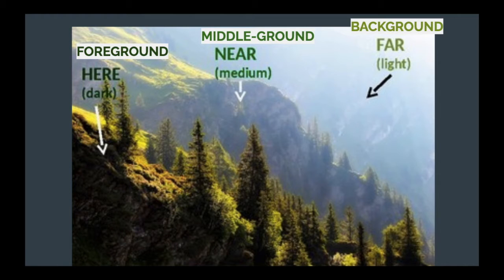You can kind of think of them as here, near, and far. In real life, the things that are really close to you are going to be darker and more saturated, rich in color. Things in the middle ground are going to be kind of in the middle, it's going to be medium, not super faded.